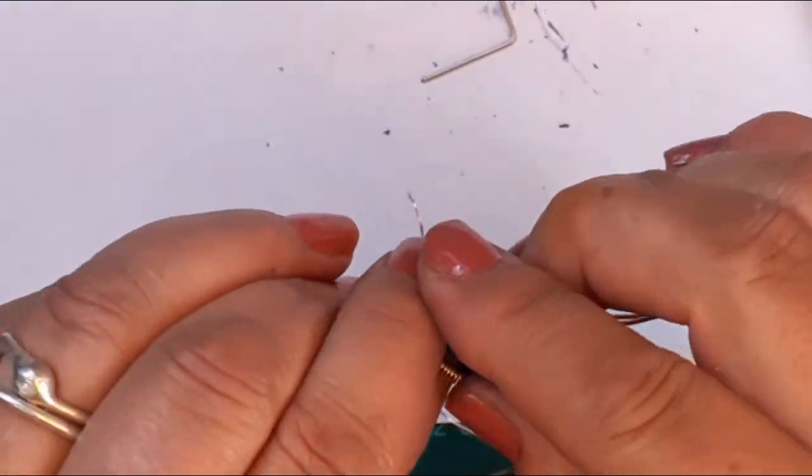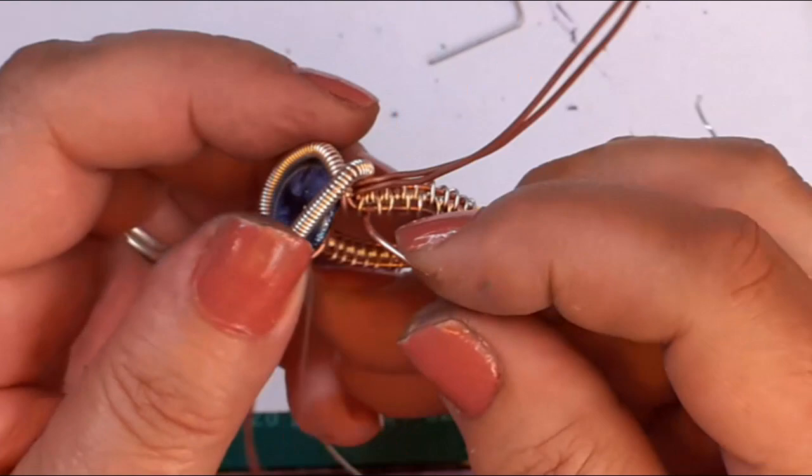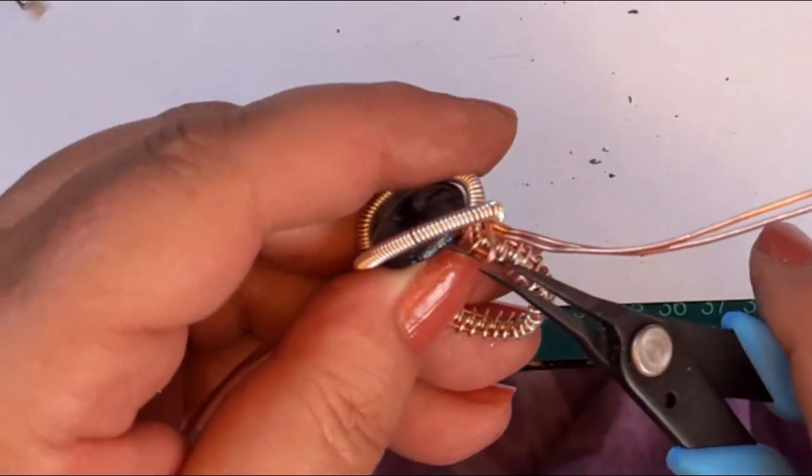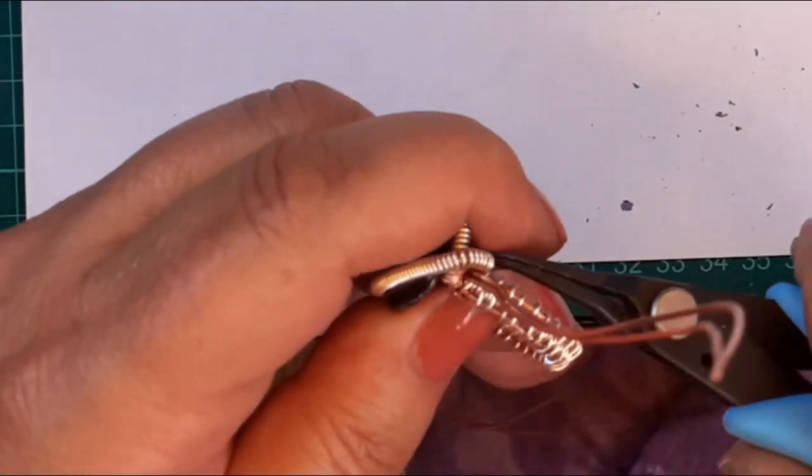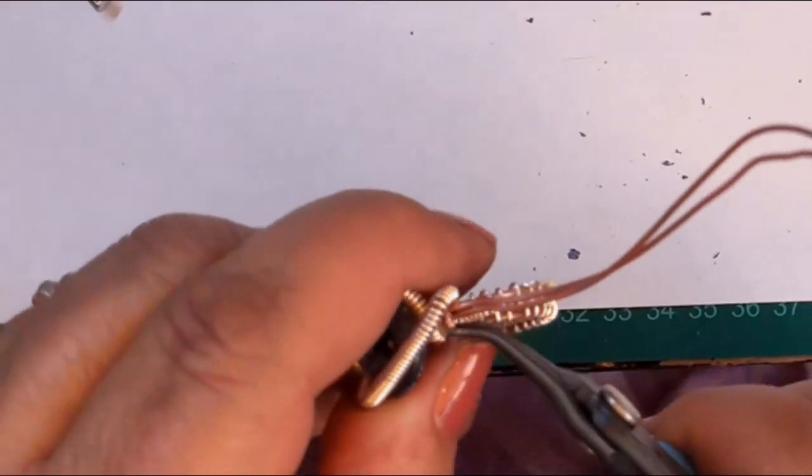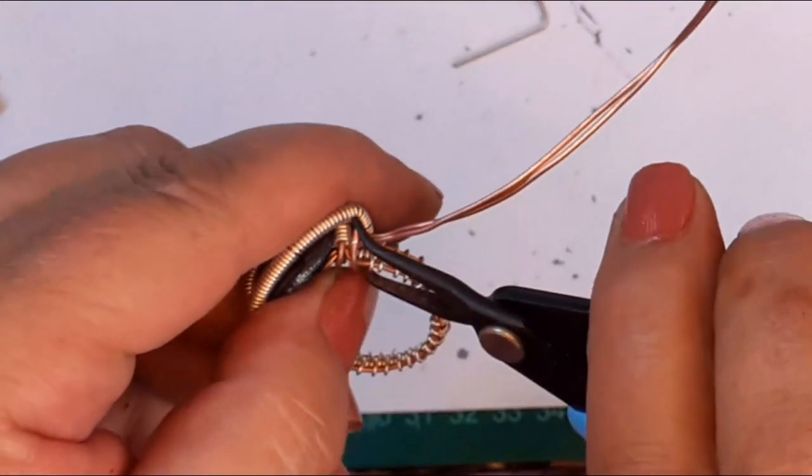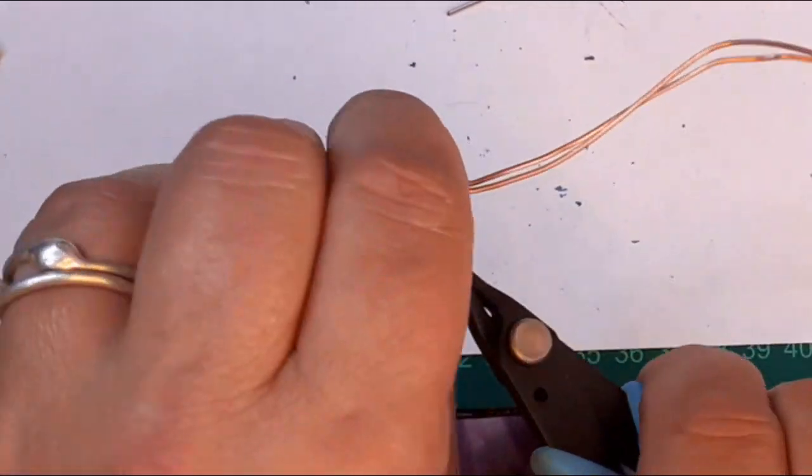Wrap the wire underneath the ring and over and tuck it in so it's hidden underneath as you can see what I'm doing here. You can, if you want, move the eye out so that it's not in the way. Do it two or three times.